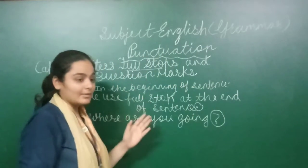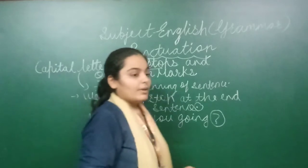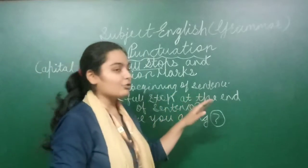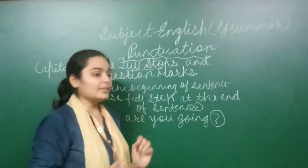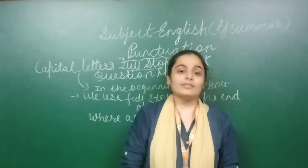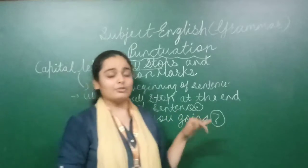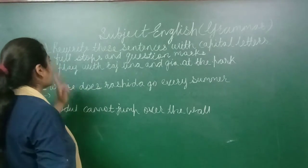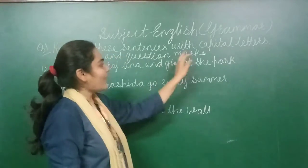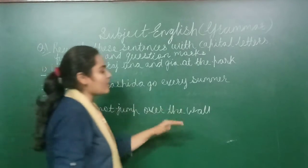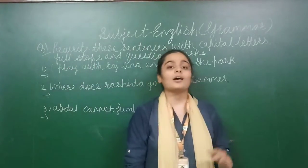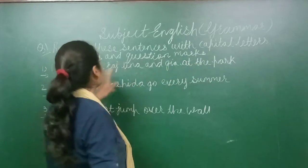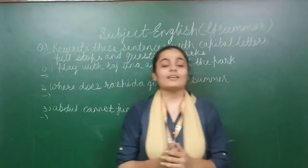This is part of our sentence rules. We always begin a sentence with a capital letter. After completing the sentence, we put a full stop. And whenever a question arises in the sentence, we use a question mark. Now let's move to the exercise: rewrite these sentences with capital letters, full stops, and question marks. Sentences are already given, and we have to rewrite them applying the rules I explained.